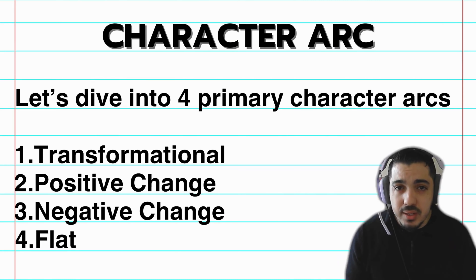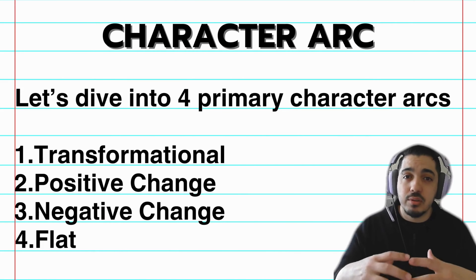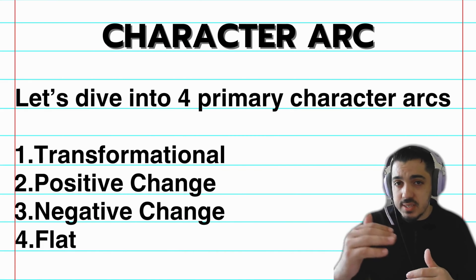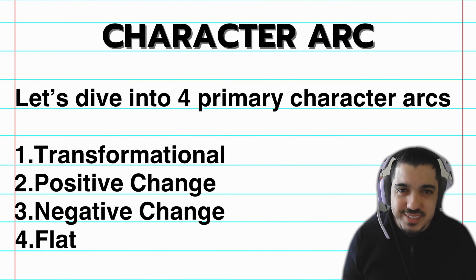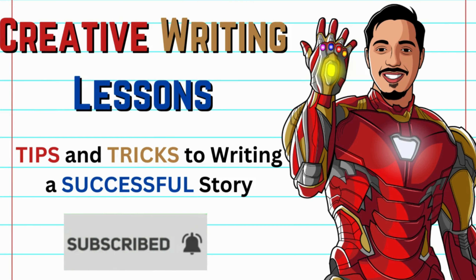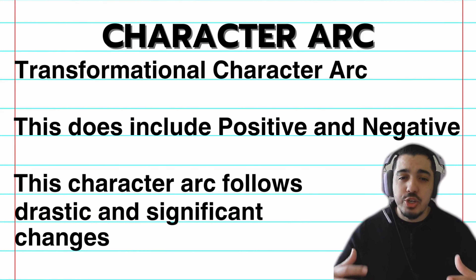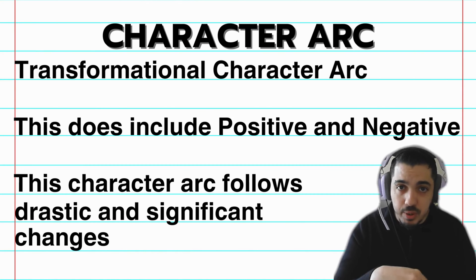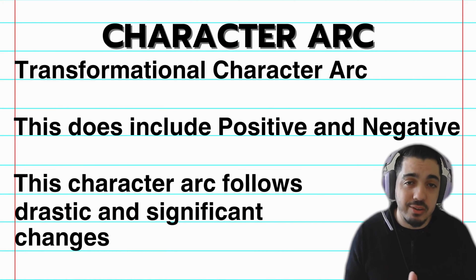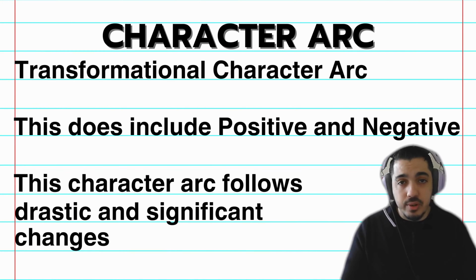I'm going to jump into four of the primary character arcs. The first is the transformational arc — you watch the character transform. Then there's the positive change and the negative change arcs. And the last one, as I mentioned, is the flat character arc. This is Creative Writing Lessons, where I give you tips and tricks for writing a successful story, especially for beginners. If you're loving this content, don't forget to like and subscribe.